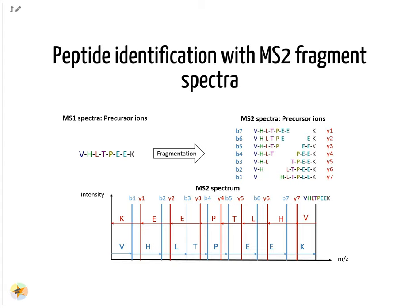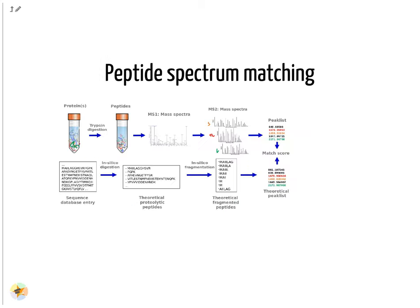The manual interpretation process is automated with so-called de novo sequencing software. These algorithms have improved in recent years and require no information about potential protein sequences in the sample. The default software for peptide identification are so-called search engines, which require information about all protein sequences of the analyzed organism as a FASTA database. From this they generate in silico spectra which are then matched to the measured mass spectra. This process is often called peptide spectrum matching.